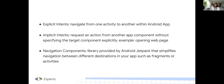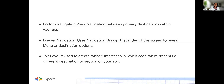Explicit intent is where you navigate from one activity to another within an Android app. Implicit intent requires an action from another app component without specifying the target component — for example, when you're opening up a web page. The navigation component is a library provided by Android Jetpack that simplifies navigation between different destinations in your app, such as fragments or activities. We also have the bottom navigation view, which is what we will look into today, because that's another popular form of navigation in Android.